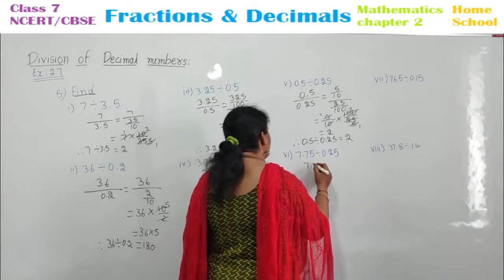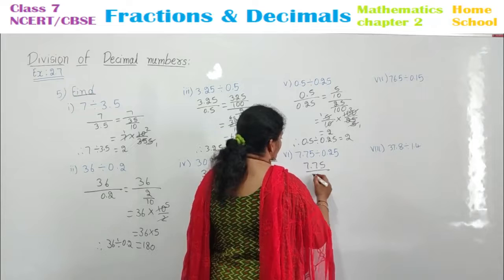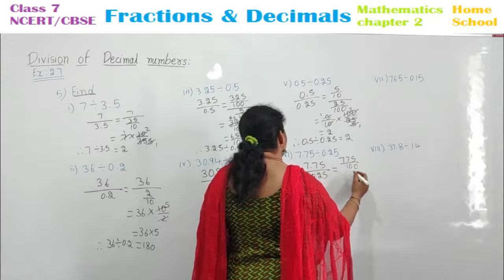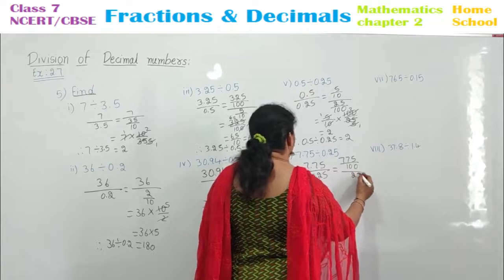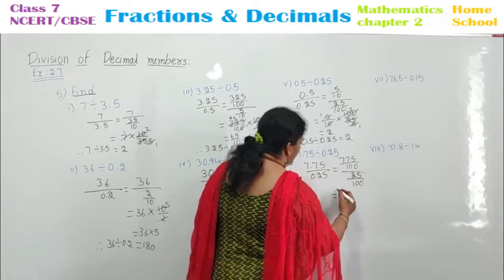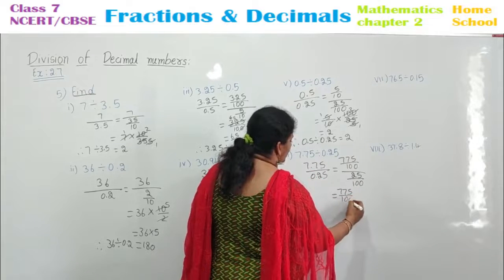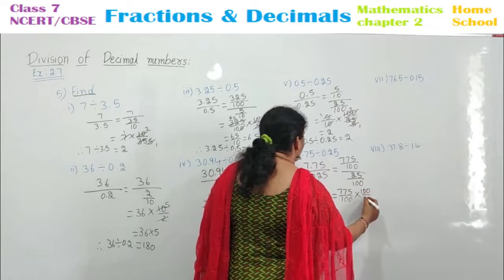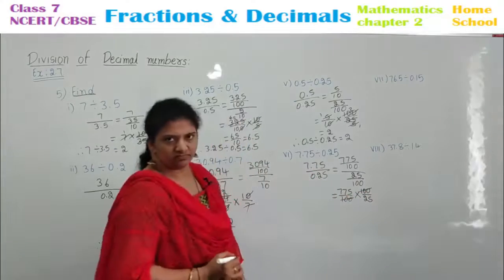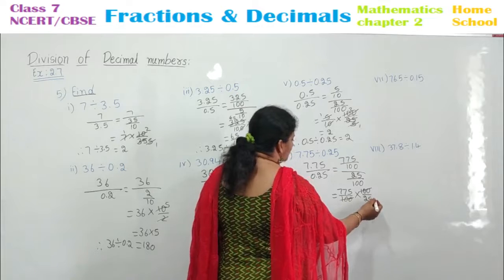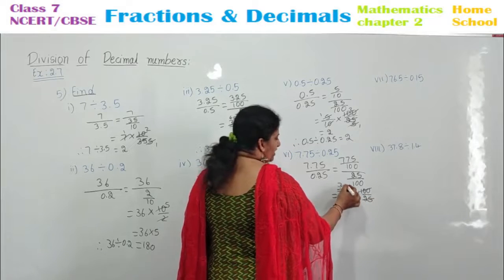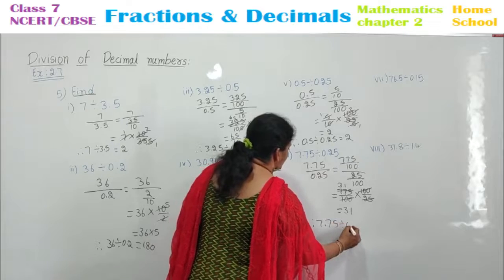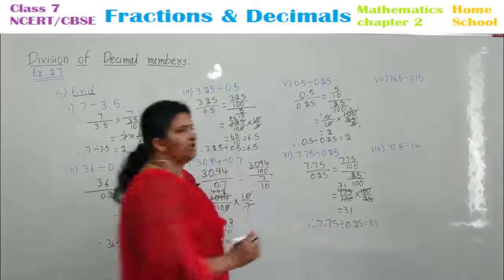See the sixth one: 7.75 divided by 0.25. Remove the decimal: 775 by 100, divided by 25 by 100. Write 775 by 100 and bring the second fraction to the numerator — do the reciprocal and multiply: 100 by 25. The 100s cancel. 25 threes are 75, and 25 ones are 25 — that gives 31. Therefore, 7.75 divided by 0.25 is equal to 31.